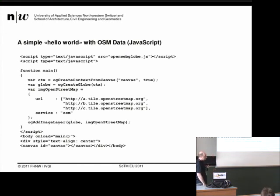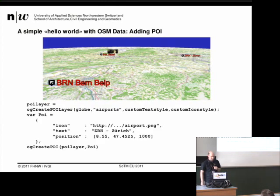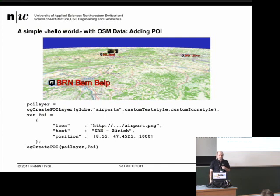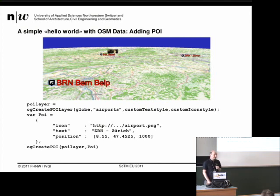If you count the lines of code again, you count four lines of code for creating this globe. Of course, a globe alone is not enough — you want to add some content, for example geometry or POIs. Creating POIs is very easy. You just create a POI layer from the globe object, give this layer a name — for example, airports. You can create custom styles, specifying the font, the size of the font, or for the icon style the size of the icon. Then you define the POI itself: a POI has an optional icon, a text, and a position including elevation. Then you create this POI and it is on the globe. You can repeat this for 10,000 more POIs and then you have 10,000 POIs on the globe.